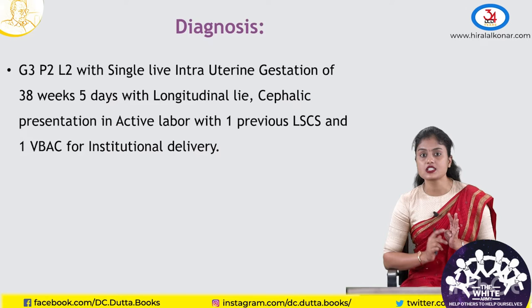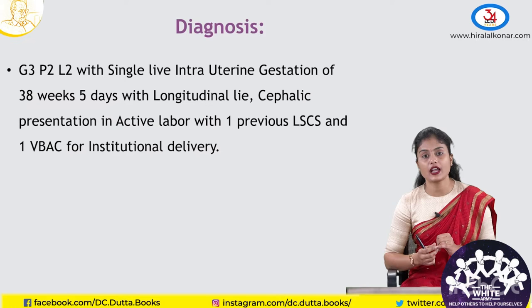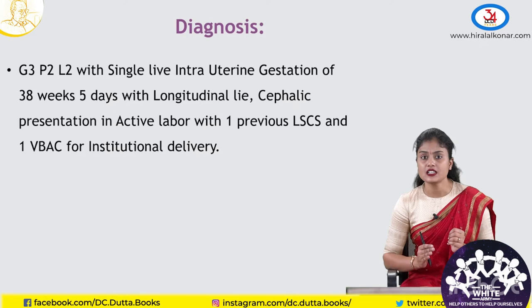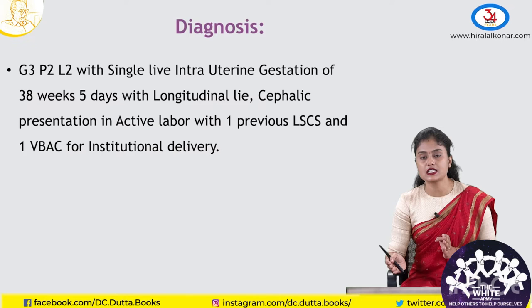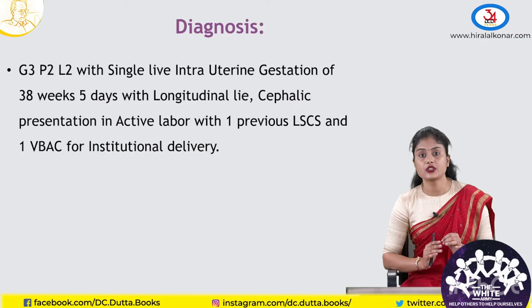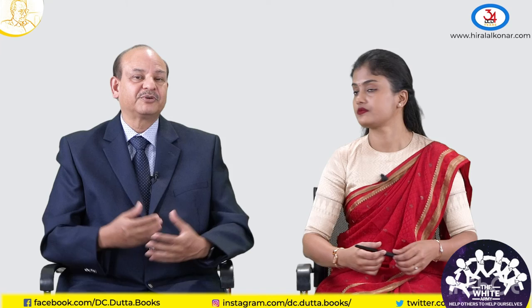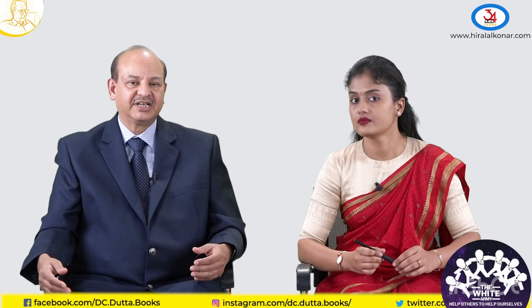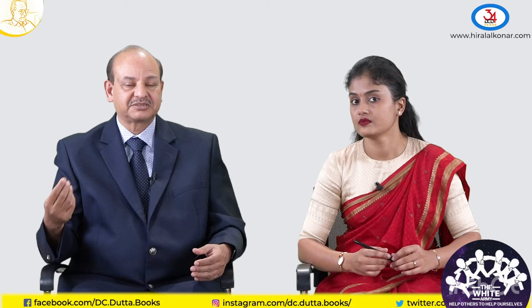Whenever counselling a patient for post-caesarean pregnancy, we should encourage her to have a trial of labour and successful VBAC — explaining the advantages: less cost, faster mobility, less hospitalization, less pain, less requirement of blood and blood products, and fewer complications. But you should also explain the difficulty of repeat caesarean section — pain, cost, everything is high. And you must explain the rarest complications: scar dehiscence, fetal distress, and uterine rupture. Impress upon the patient that as labour progresses, we will monitor continuously and at the slightest indication of a problem, we will proceed to emergency caesarean delivery.